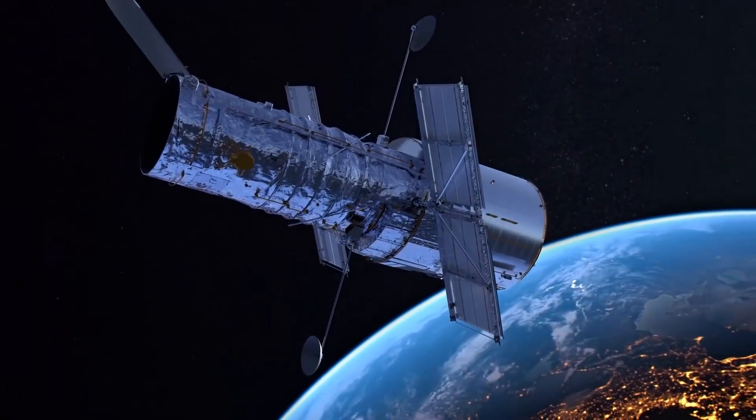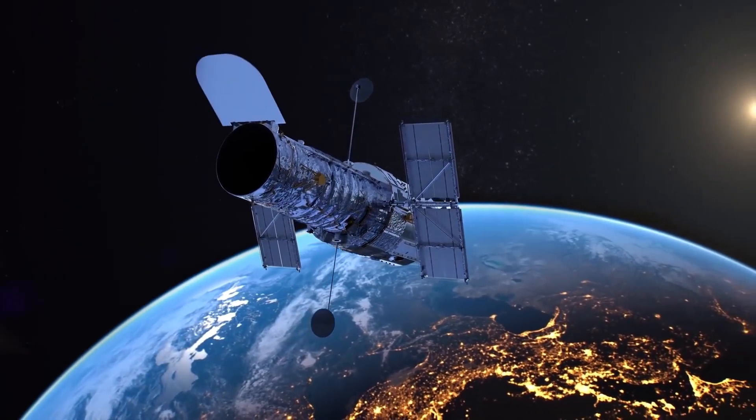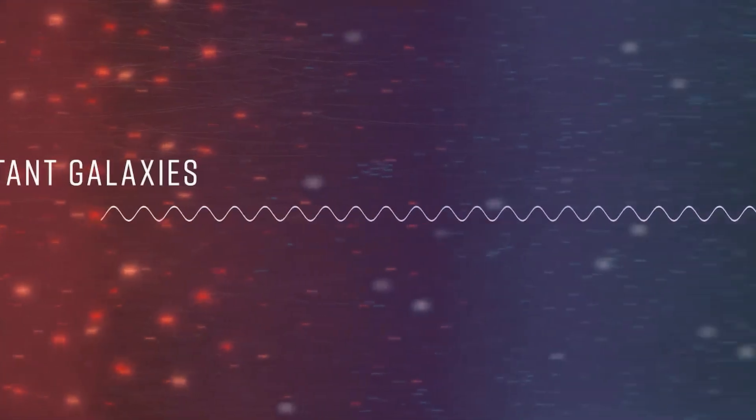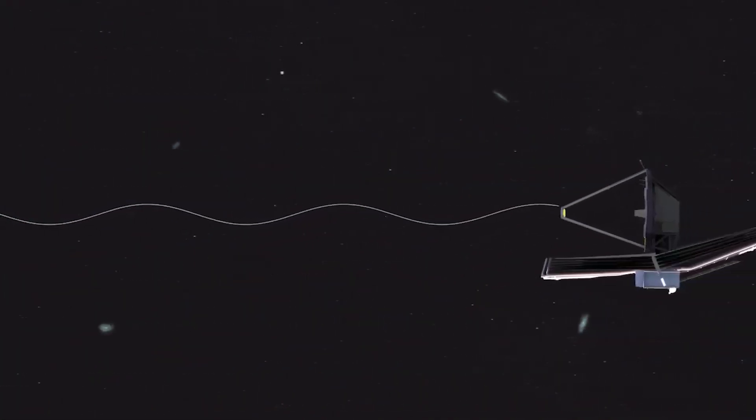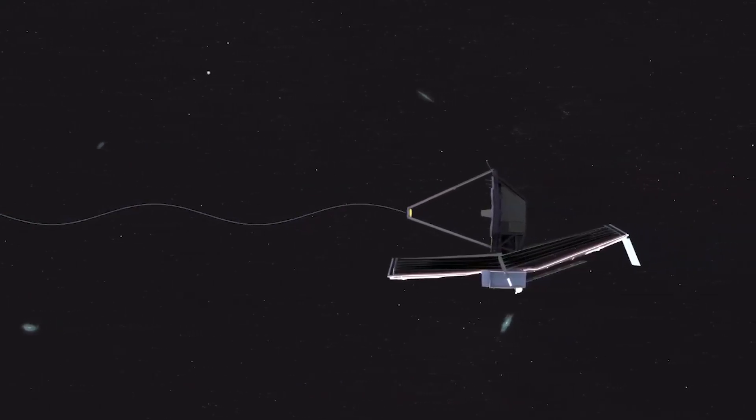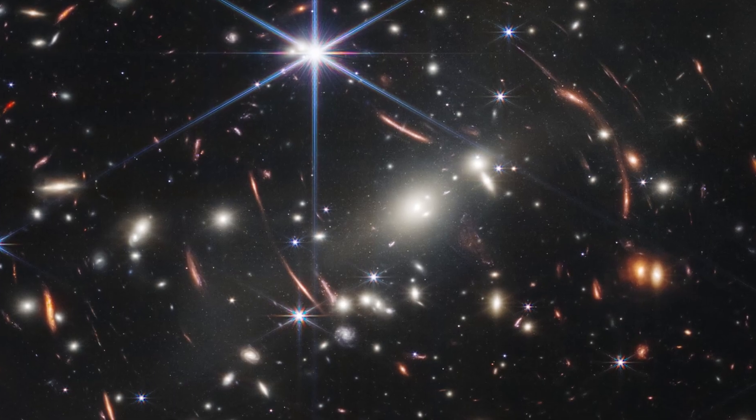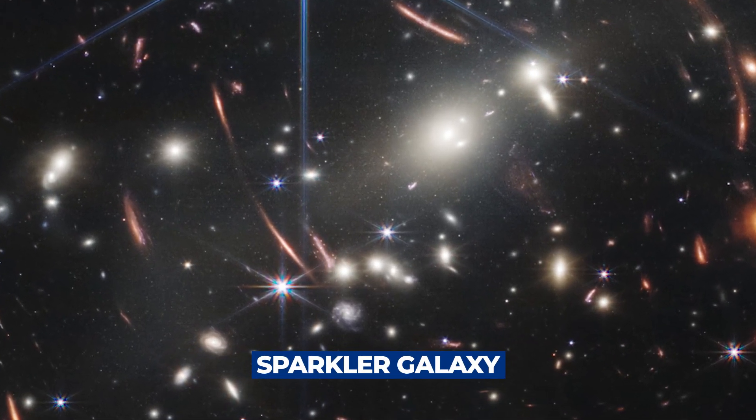Both the Hubble Space Telescope, which had previously observed the galaxy but was unable to resolve the globular clusters surrounding it, and a natural phenomenon known as gravitational lensing, contributed to JWST's ability to observe the sparkler galaxy. A galaxy in JWST's first deep field image contains a galaxy 9 billion light years away, nicknamed the sparkler galaxy.